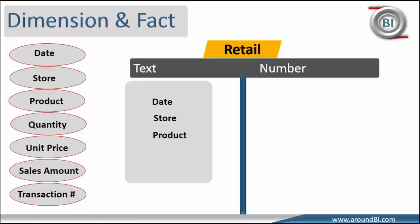I can pull date, store name and product in text group and quantity, unit price, sales amount and transaction number will fall into numeric group.